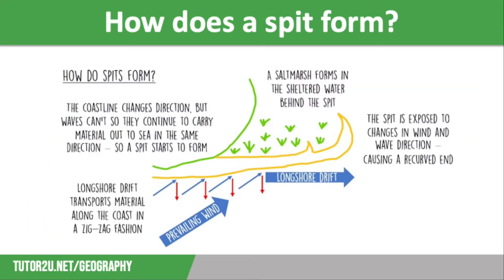So how does a spit form? Spits are formed by longshore drift carrying sediment along a coastline. The swash runs up the beach at an angle to the shore from the same direction as the prevailing wind. However, the backwash returns at right angles to the coastline due to gravity, meaning that material is carried along the coast in a zigzag fashion.